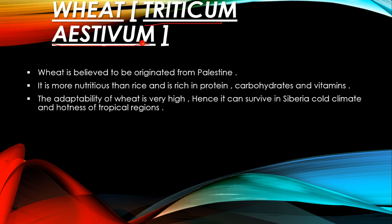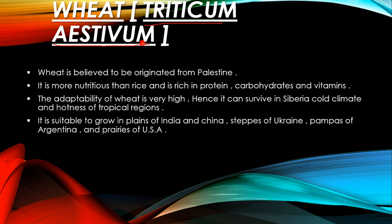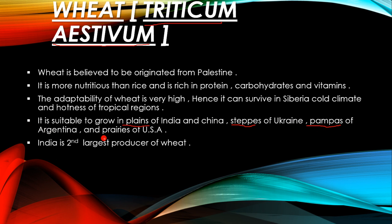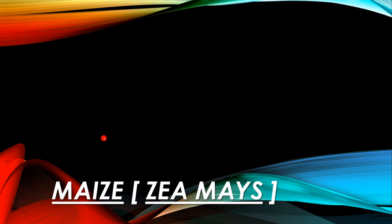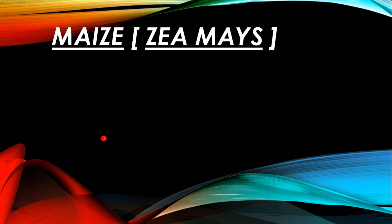Wheat is suitable to grow in the plains of India and China, the steppes of Ukraine, the pampas of Argentina, and the prairies of the USA. Steppes, pampas, and prairies are all names for grasslands. India is the second largest producer of wheat.